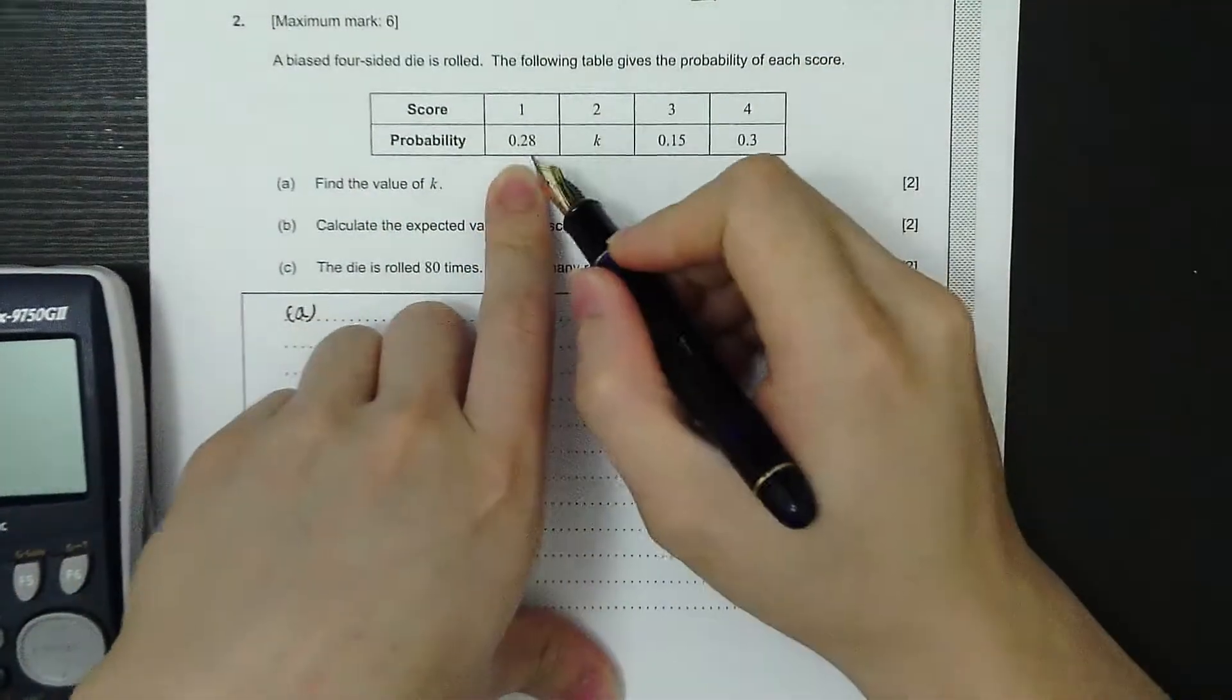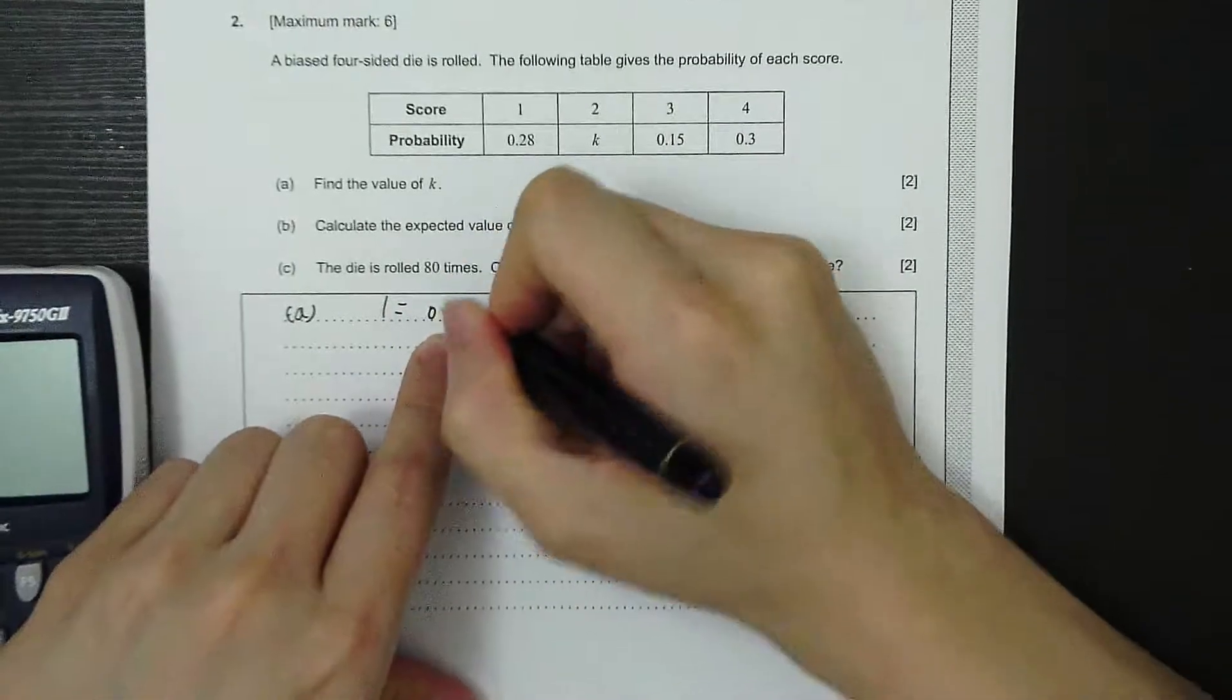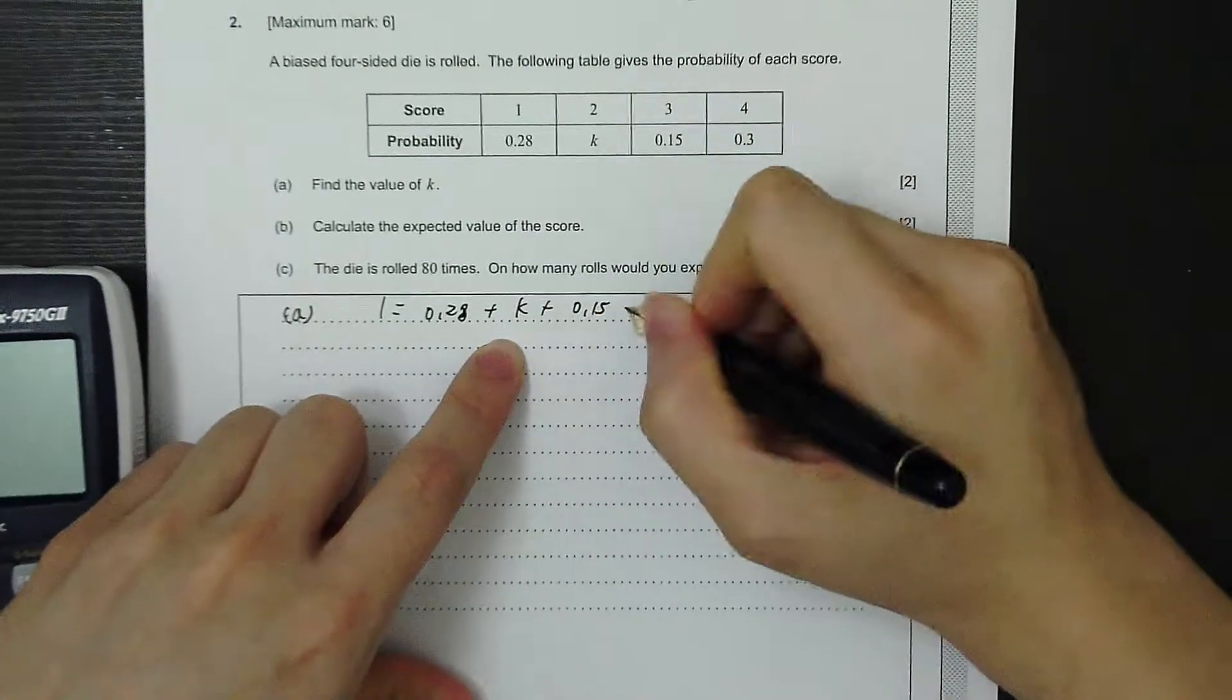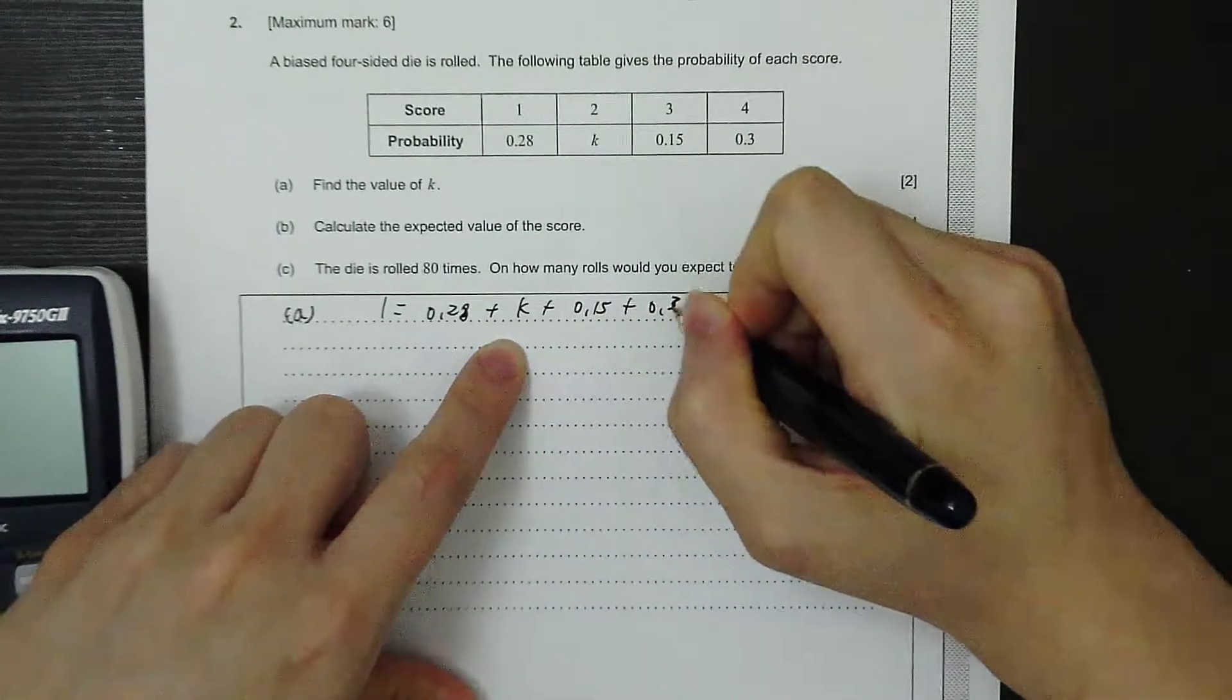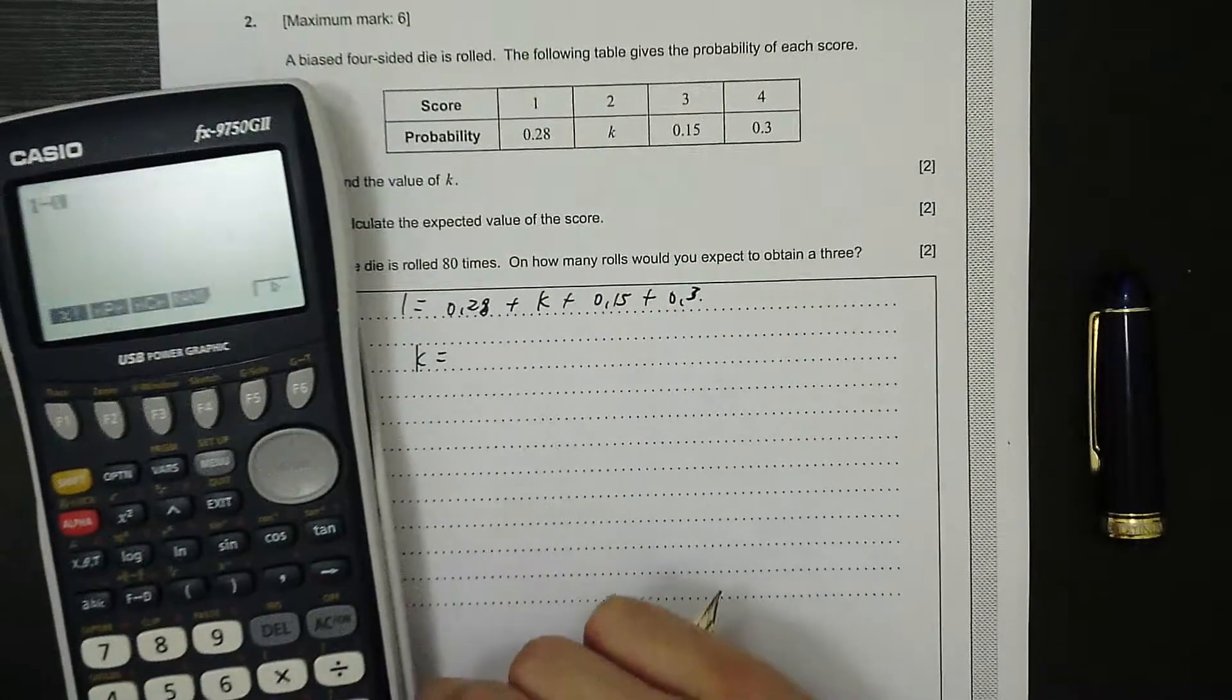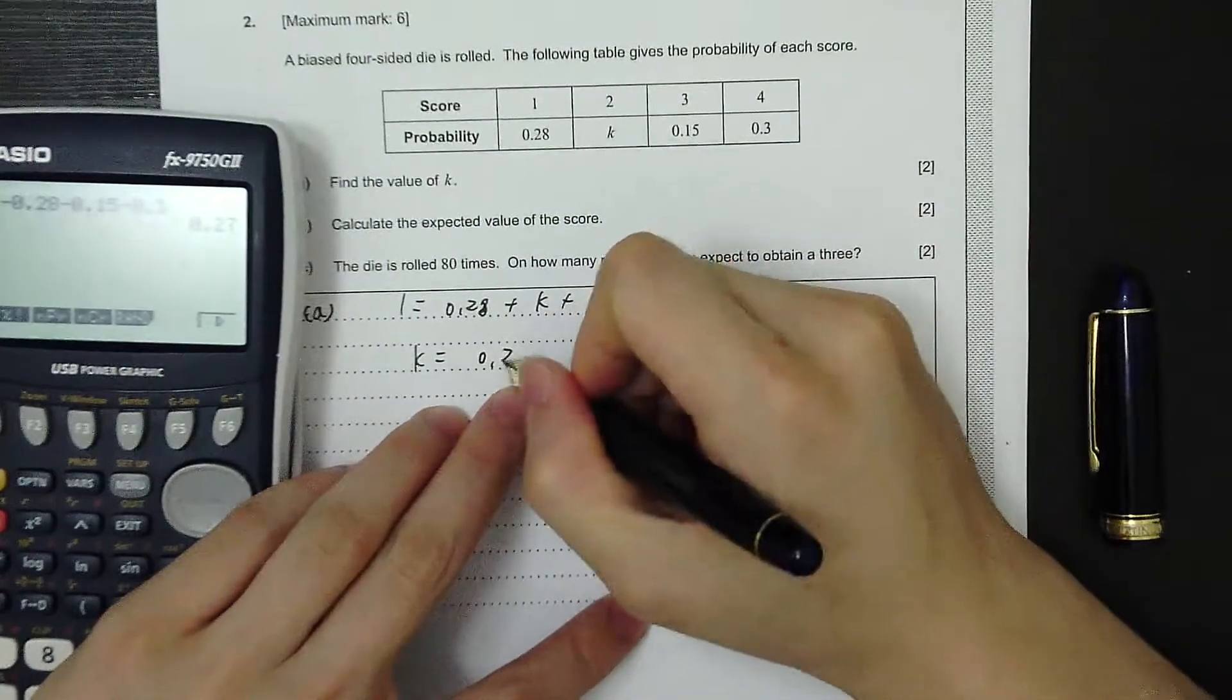First thing first, sum of all the probabilities equals 1. So we can make an equation: 1 equals 0.28 plus K plus 0.15 plus 0.3. So K equals 1 minus 0.28 minus 0.15 minus 0.3. So K equals 0.27.